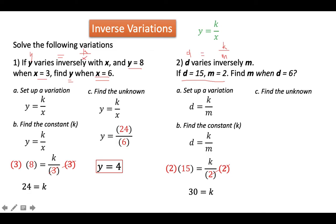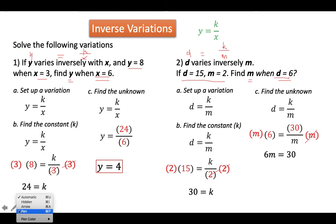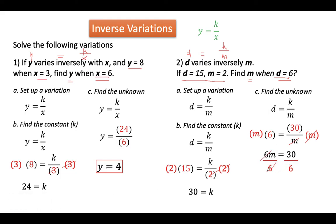Finally, we find the unknown. We use the same variation and replace k with 30. Our given d is 6, and we need to find m. Since m is in the denominator, we multiply each side by m to simplify. This gives us 6m equals 30. To isolate m, we divide both sides by 6, and 30 divided by 6 is 5. So m is equal to 5.